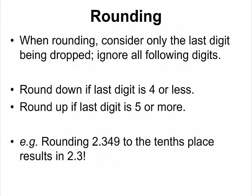Before we begin, let us first quickly take a look at how to round numbers. This should be something you already know. We round down whenever the last digit we want to consider is 4 or less. We round up if the last digit we want to consider is 5 or more.